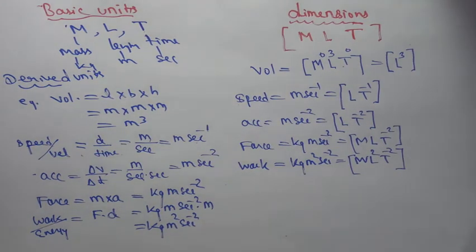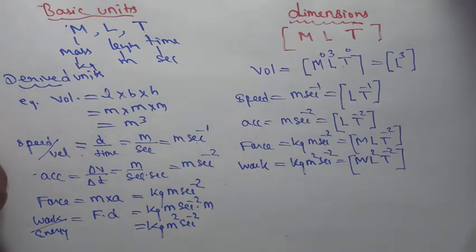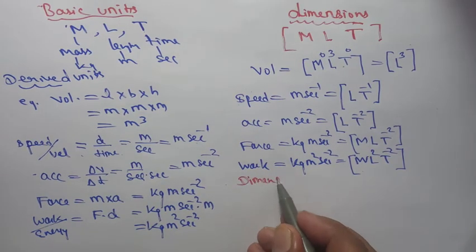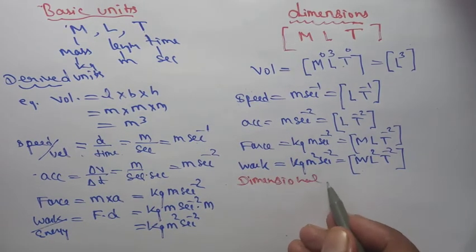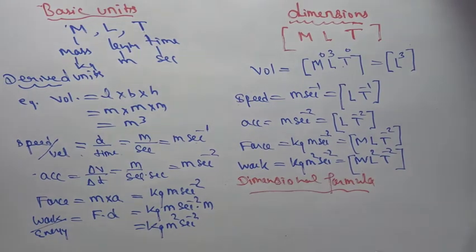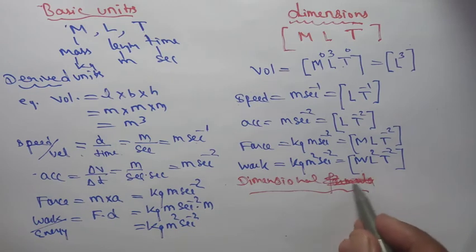Work/energy is in kg m² s⁻². So dimension = [M L² T⁻²]. In this way, if we know the formula, we can write the dimension of any quantity. If we are asked to define dimensional formula: it is writing basic quantities raised to powers — that is the dimensional formula.